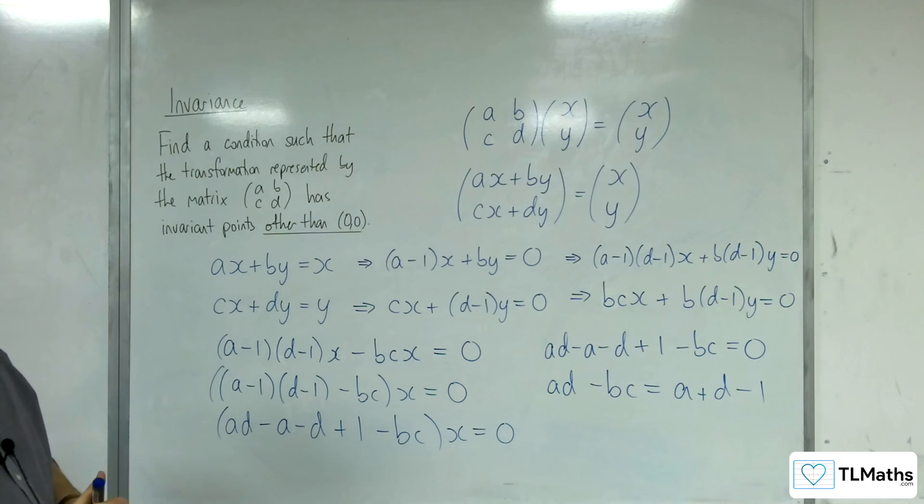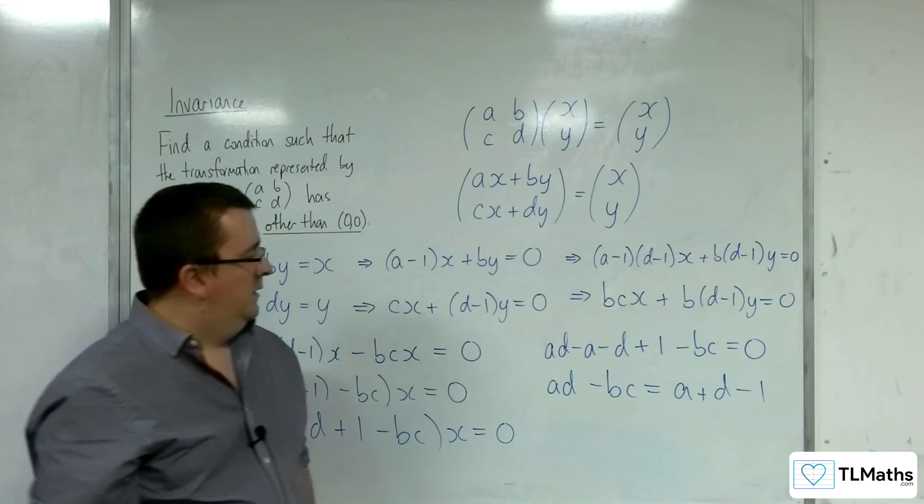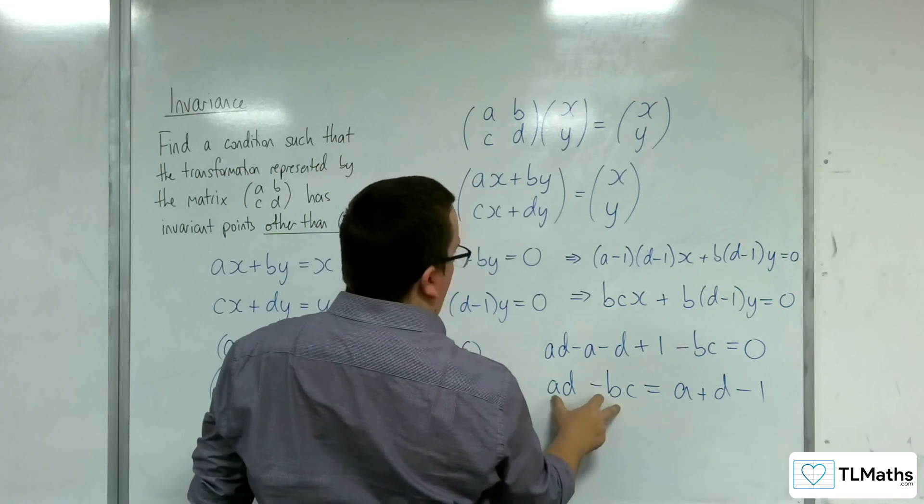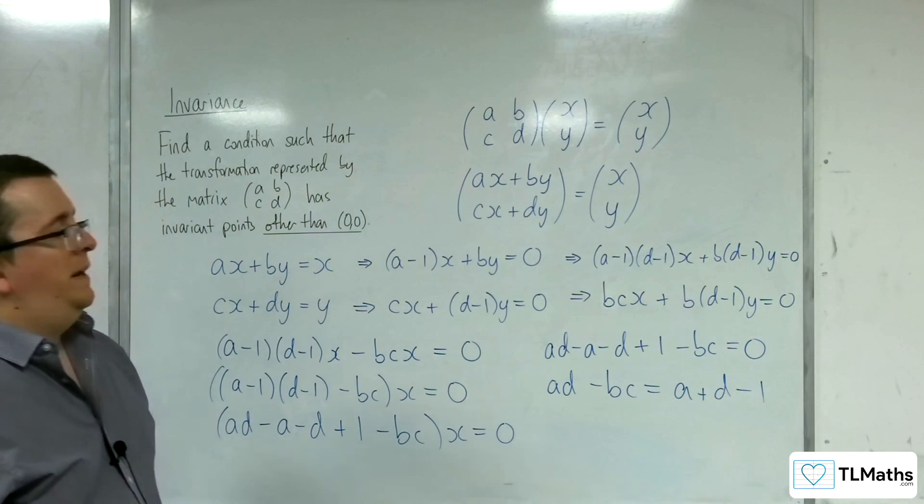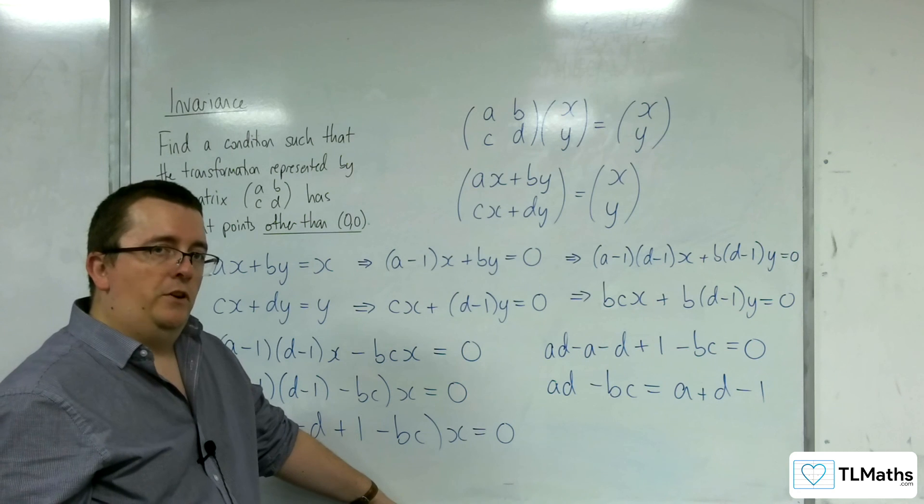Now, eagle-eyed among you, if you have read ahead, you might be recognizing this value here. This ad - bc is actually equal to the determinant of the matrix.